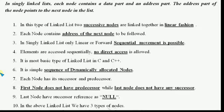Forward movement is possible — we can access nodes sequentially in the forward direction. Backward node access is not possible; for example, from the third node you cannot go back to access the fourth node backwards. Fourth point: elements are accessed sequentially — no direct access is allowed.